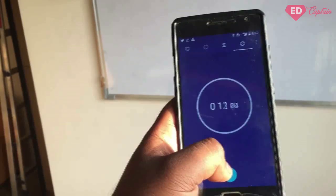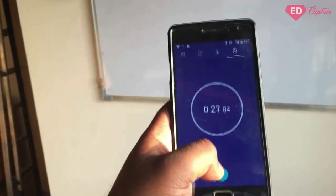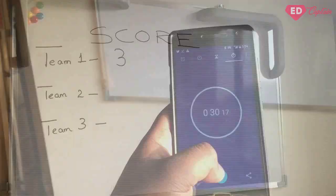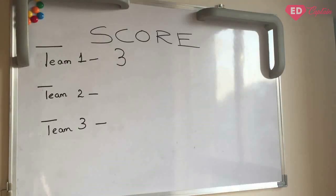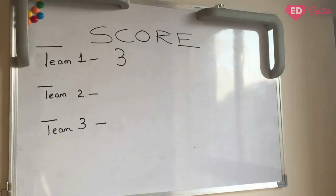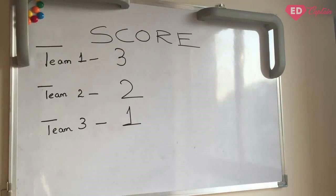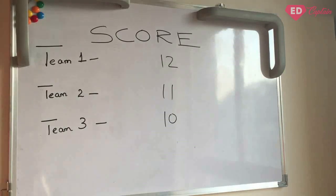Each player or team will only get 30 seconds to come up with their words. After player 1's time is up, player 2 will roll the dice. Now if the dice says 2, player 2 will give 2 words related to the theme vacations in 30 seconds. Every player will get points equal to the number of words they give.